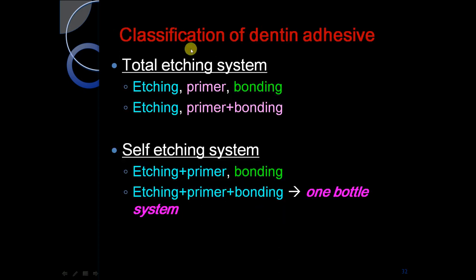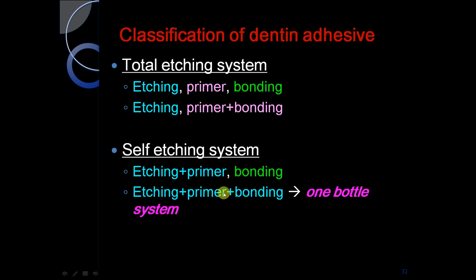Classification of dentine adhesives: total etching system and self-etching system. The total etching system comprises etching, priming, and bonding separately, or etching plus priming plus bonding in one. Self-etching uses etching plus primer in one bottle, then bonding. The last option is the etching plus priming plus bonding all in one bottle system.